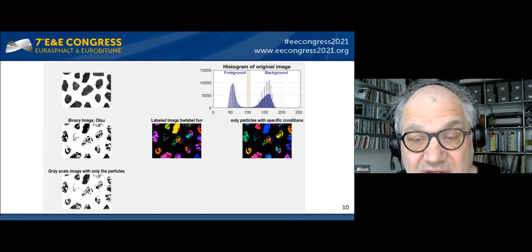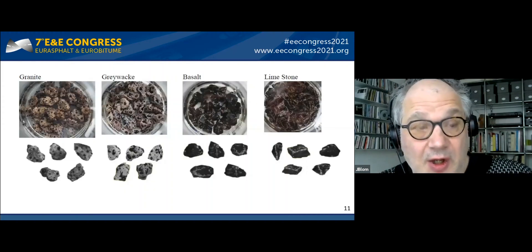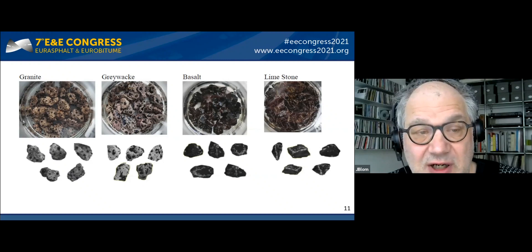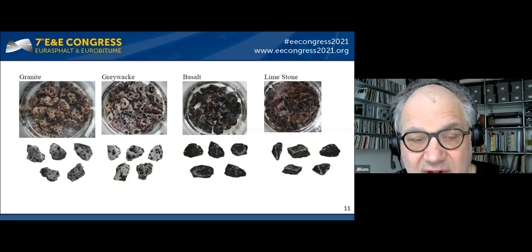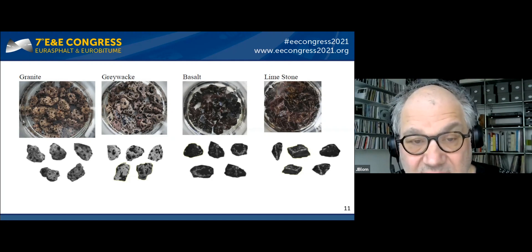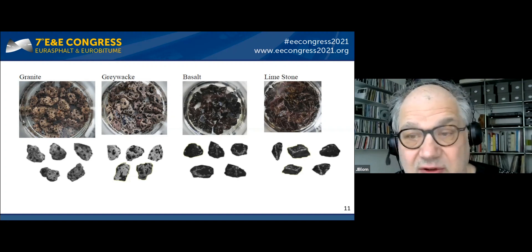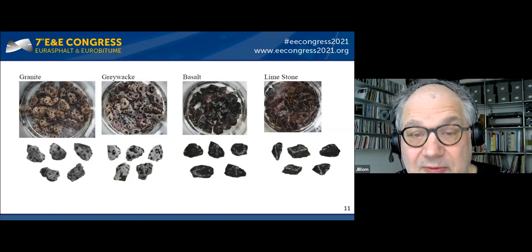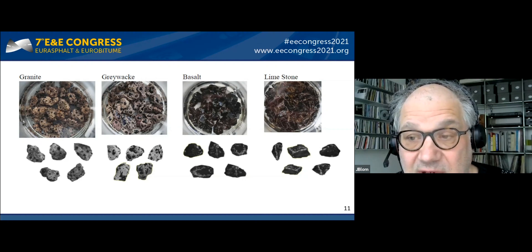For the experiment, we used the same stones as in the RILEM round robin: granite, greywacke, basalt, and limestone. You can see quite well the different colorizations — light stones and darker stones. The darker stones challenge our method since it is more difficult to separate the bitumen color from the stone color.